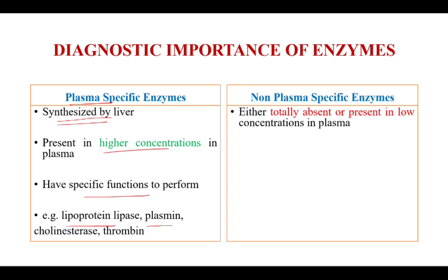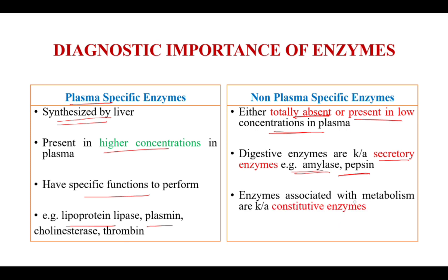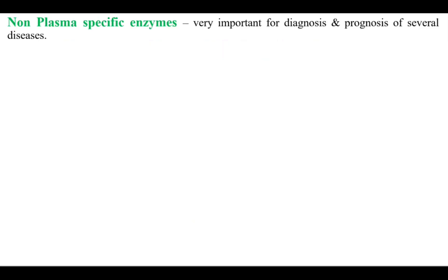Non-plasma-specific enzymes are either totally absent or present in low concentration in plasma. Digestive enzymes or secretory enzymes come under this category — examples are amylase or pepsin. Enzymes associated with metabolism are also called constitutive enzymes. Examples include lactate dehydrogenase, alkaline phosphatase, and creatine phosphokinase.